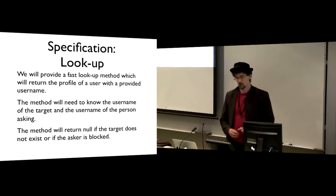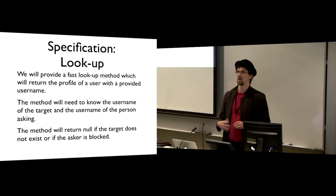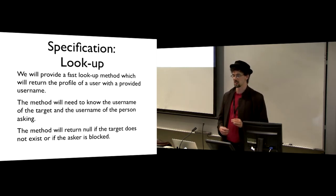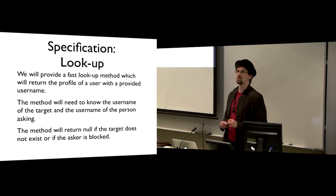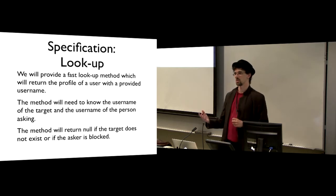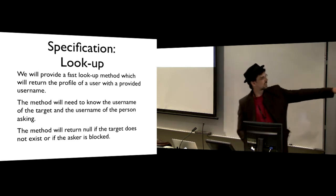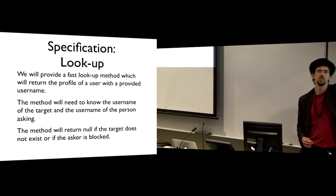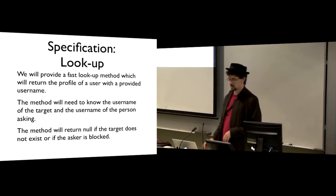For lookup, we want fairly fast lookup. Given a username, we want to be able to instantly return the profile of that user. However, we want to restrict that to people who aren't blocked. So when we ask for a profile, we're going to give the name of the person requesting the profile, and if the person requesting the profile is blocked, we're not going to return the profile. If a user doesn't exist or the asker is blocked, we're going to return null instead. This is the way we're going to do lookup.